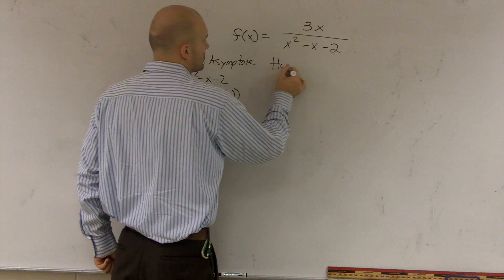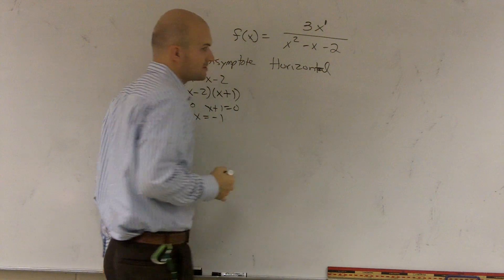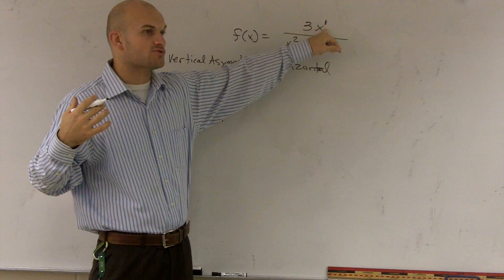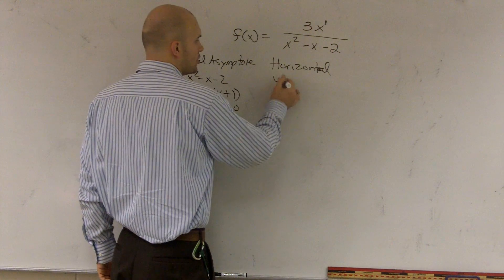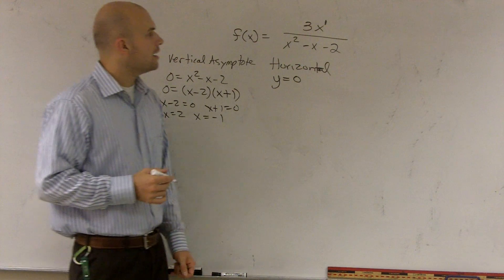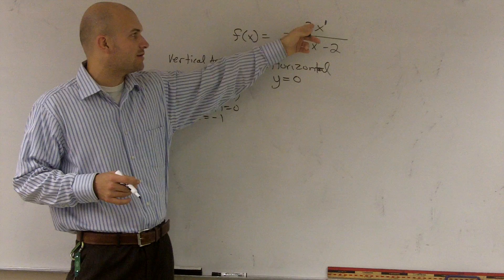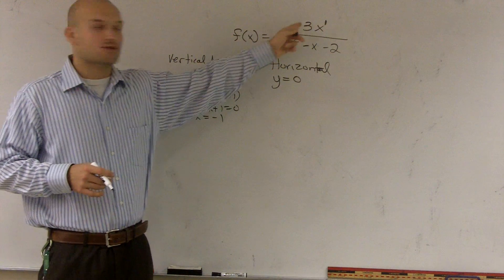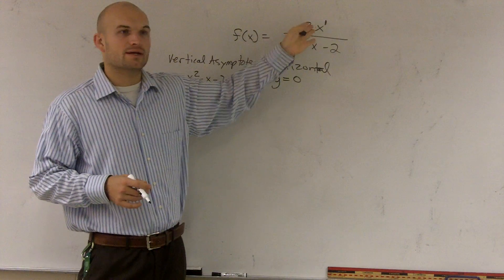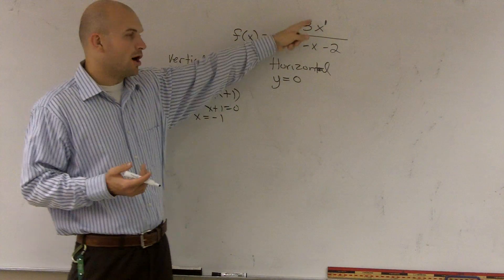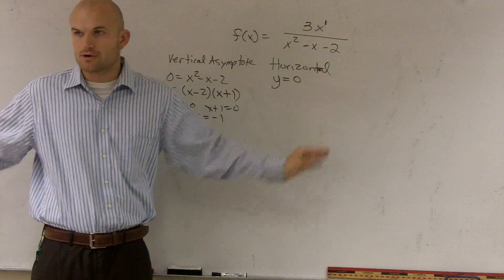Next, we need to find the horizontal asymptote. We look at the leading degrees of both polynomials. The degree on top is 1, and the degree on the bottom is 2. Whenever the degree on top is smaller than the degree on the bottom, your horizontal asymptote is y equals 0. If the degrees are equal — say this were 3x squared — you take the coefficients of your leading terms and divide, so it would be 3 over 1, which is 3. If the degree on top is larger than on the bottom, there is no horizontal asymptote. So there are three cases: smaller gives y equals 0; equal means divide the coefficients; larger means no horizontal asymptote.